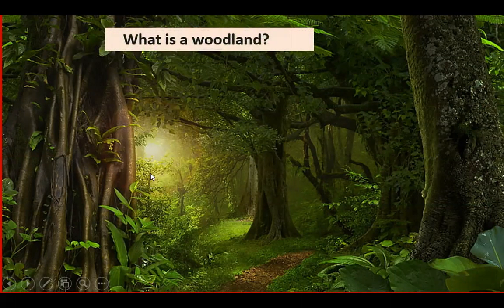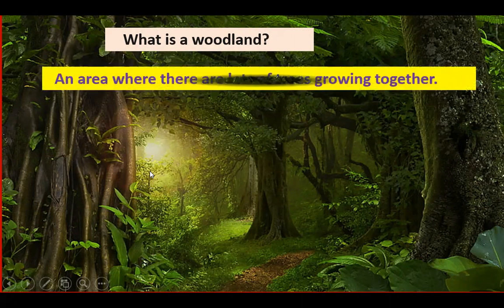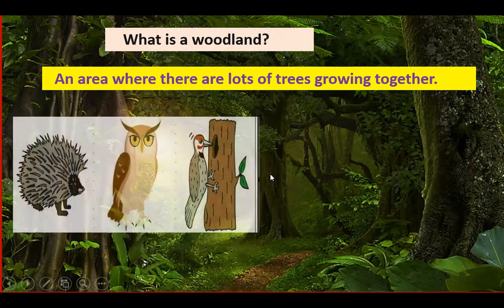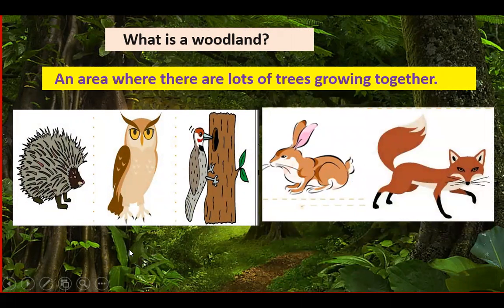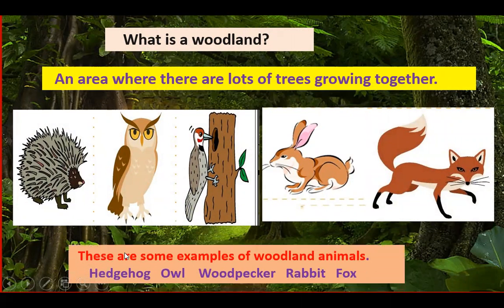What is a woodland? A woodland is an area where there are lots of trees growing together. These are some examples of woodland animals: hedgehog, owl, woodpecker, rabbit, and fox.